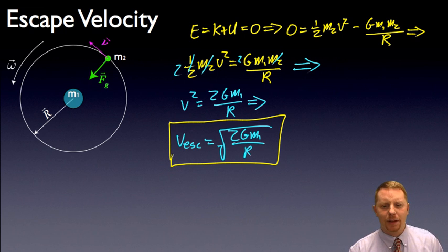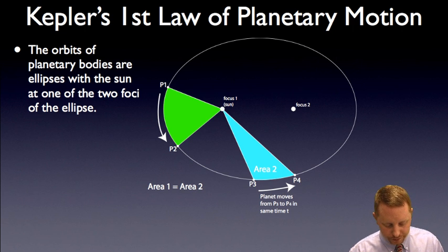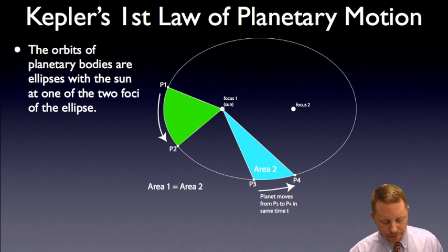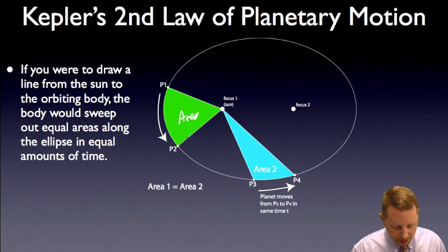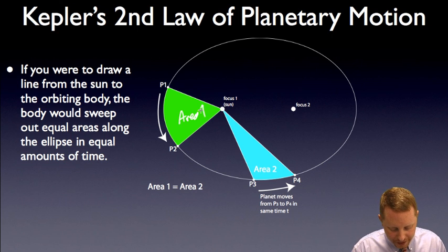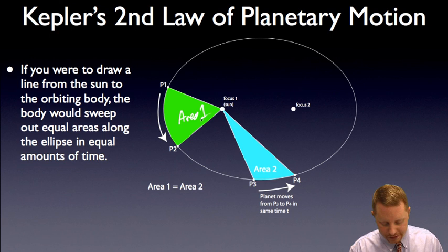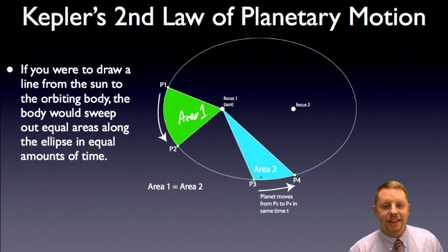Now let's look at elliptical orbits — most real orbits are nearly circular, even if slightly elliptical. Kepler's first law states that the orbits of planetary bodies are ellipses, with the Sun at one of the two foci. Kepler's second law says that a line drawn from the Sun to the orbiting body sweeps out equal areas in equal times. So if area 1 equals area 2, those sweeps occur in the same amount of time, giving us a way to relate velocity and position in an elliptical orbit.